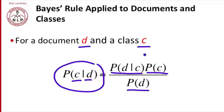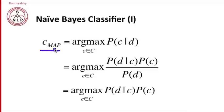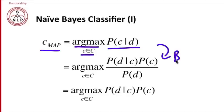So let's see how to use that in the classifier. The best class — the maximum a posteriori class, the class we're looking to assign this document to — is, out of all classes, the one that maximizes the probability of that class given the document. By Bayes rule, whichever class maximizes the probability of C given D also maximizes the probability of D given C, times the probability of the class over the probability of the document.